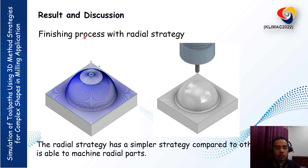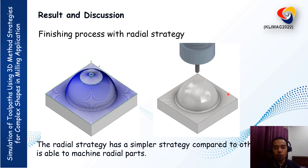This is the finishing process using the Radial strategy. We can see that the movement looks like a radial pattern. The Radial strategy has a simpler movement compared to other strategies, and it is able to machine both concave and convex parts.